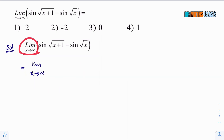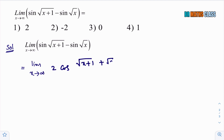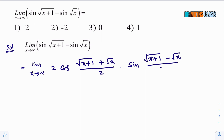Limit x approaches to infinity. You apply the sin C minus sin D formula, then it is 2 cos of (C plus D) by 2 — that is, root over (x plus 1) plus root x, divided by 2 — into sin of (C minus D) by 2, that is, root over (x plus 1) minus root x, divided by 2.